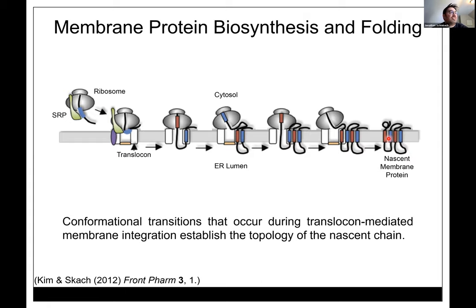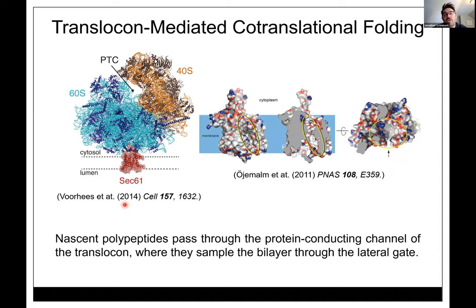The ribosome continues producing the protein. As hydrophobic bits emerge, they go into the translocon and slide laterally into the membrane one by one, which establishes the orientation of the protein in the membrane — the topology. This is an essential prerequisite for proper folding and function of membrane proteins.